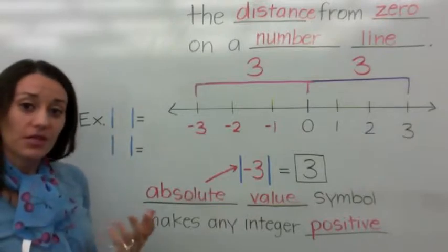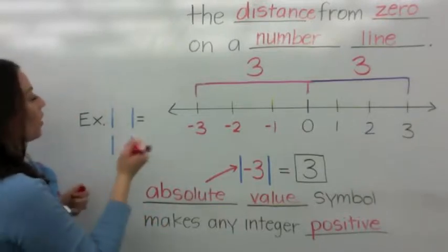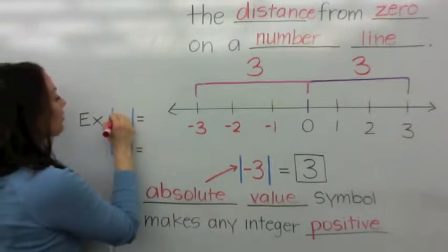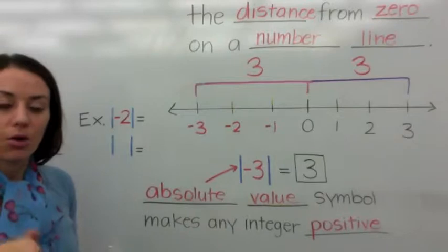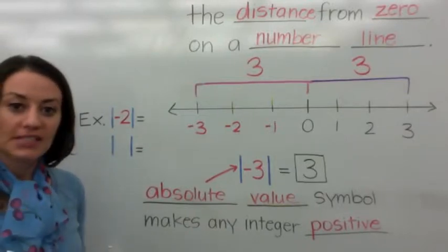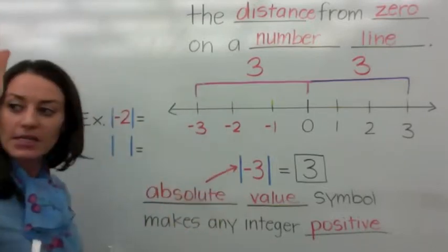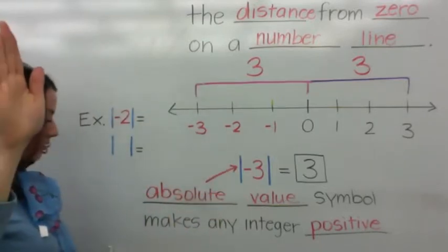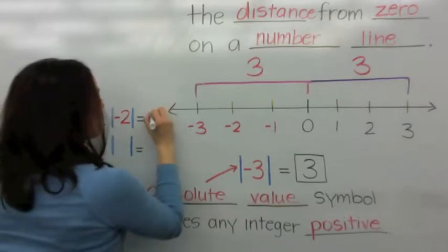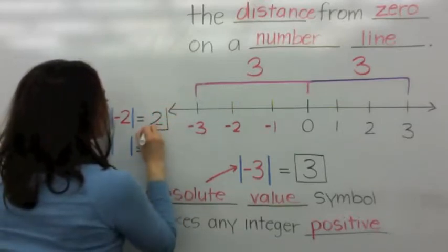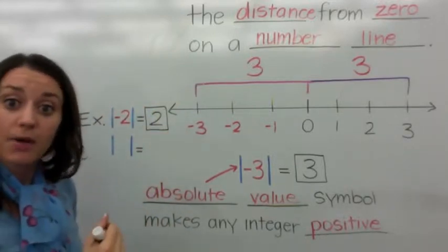So I'll give you the example that we just talked about. If you want to know what is the absolute value of negative two, what would you tell me? It makes any integer positive, so the answer is positive two. Notice how my answer was positive — don't write a positive symbol there because we're going to assume it is positive.